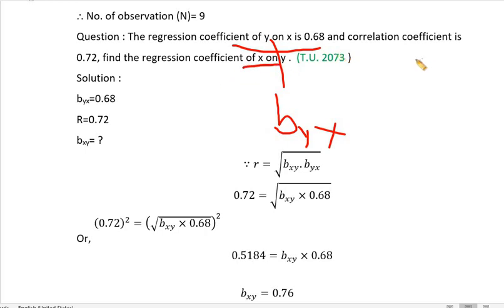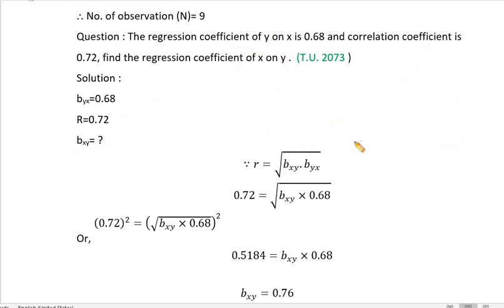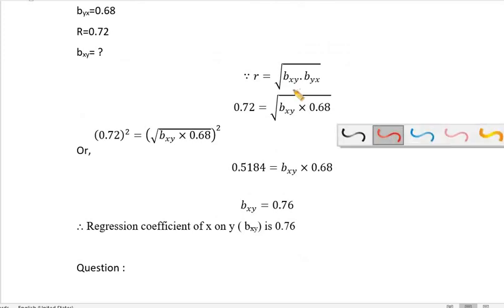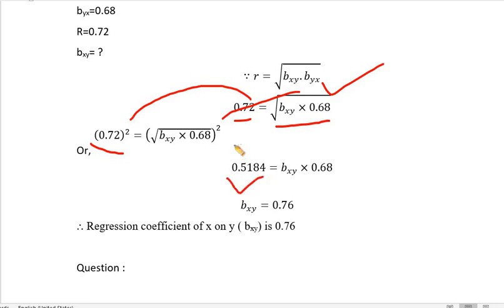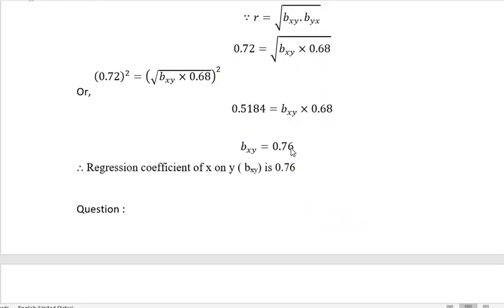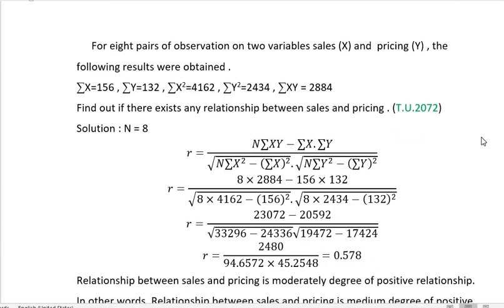The regression coefficient of x on y is b sub xy. We use r squared equals b sub xy times b sub yx. So 0.72 squared equals 0.5184, and dividing by b sub yx which is 0.68 gives b sub xy equal to 0.5184 divided by 0.68. Since r is 0.72, we can find b sub xy accordingly.